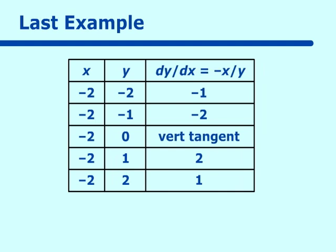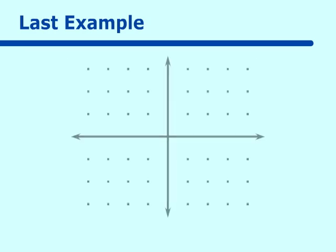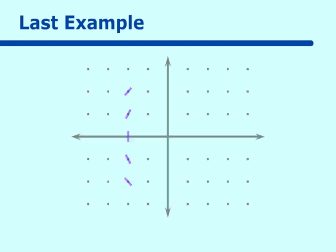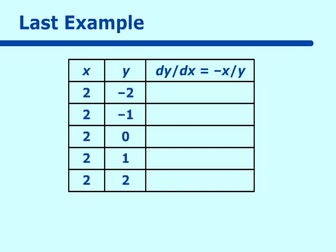Let's graph these on our grid. At (−2, −2) we have a slope of negative 1; at (−2, −1) a slope of negative 2; at (−2, 0) the vertical tangent line; at (−2, 1) a slope of 2; and at (−2, 2) a slope of 1. Now for x equal to 2, we're just changing the sign on our slopes, so we get 1, 2, another vertical tangent, negative 2, and negative 1. Let's put those in.